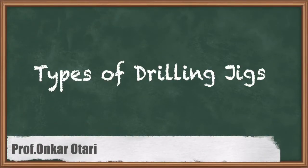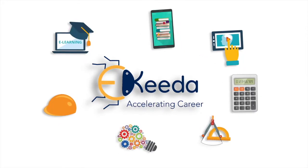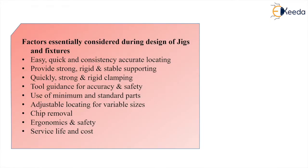Now students, let us see some factors which are essentially considered during the designing of jigs and fixtures. So what are these factors? There should be easy, quick and consistent accurate locating, then provide strong rigid and stable supporting, quick strong and rigid clamping, tool guidance for accuracy and safety, use of minimum and standard parts, adjustable locating for variable size, swarf removal or chip removal, ergonomics and safety, and service life and cost. These are some essential factors we consider during the designing of jigs and fixtures.